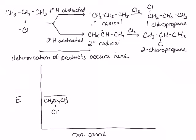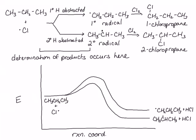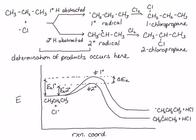Because the structure of the transition states lies between the structure of the products and the reactants, the energies of the transition states will be affected by the difference in energies of the products. The transition state to form the primary radical will be higher in energy than the transition state to form the secondary radical. It is this difference in activation energies that is responsible for the difference in rates of formation of the primary and secondary radicals, and for the formation of 2-chloropropane as the major product. Because the activation energy for the secondary radical is lower, it is formed more quickly.